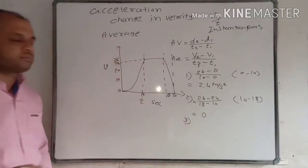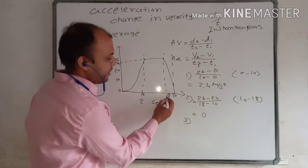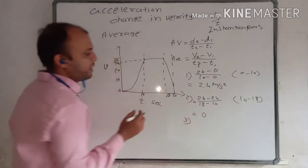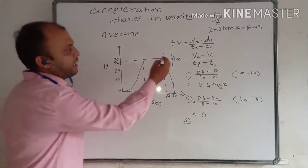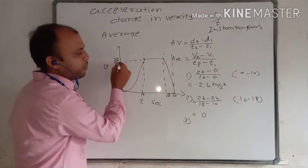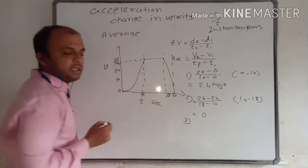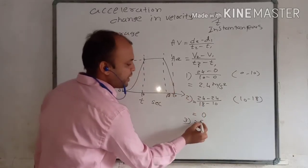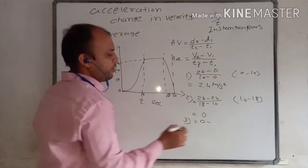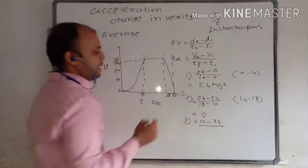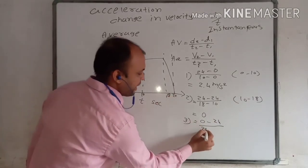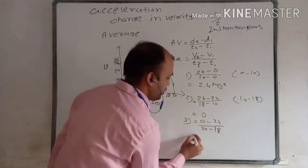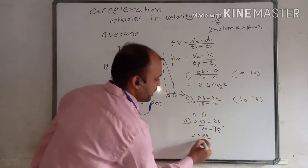Now in the third case, 18 to 20 seconds, velocity is decreasing. At 18 seconds velocity is 24, but at 20 seconds velocity is 0. So our final velocity is 0, initial velocity is 24, and time is 20 minus 18. That gives minus 24 divided by 2, so the answer is minus 12 meters per second squared.